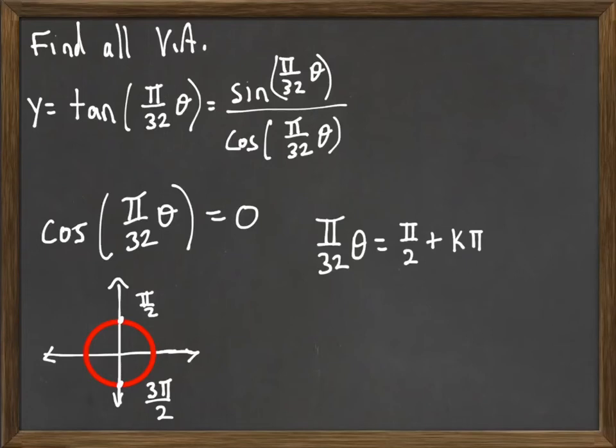Because we're finding all vertical asymptotes. Not just all the ones between 0 and 2π, but everywhere. We're looking at π over 32 θ. So that's what π over 32 θ has to be. But we need to solve for θ.